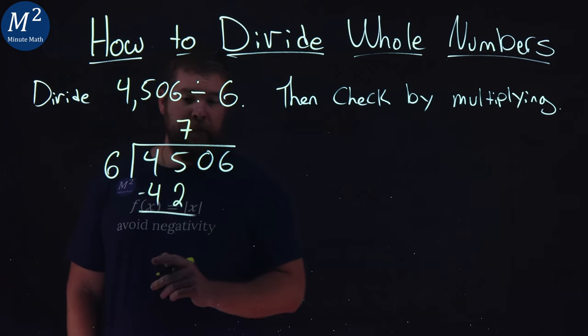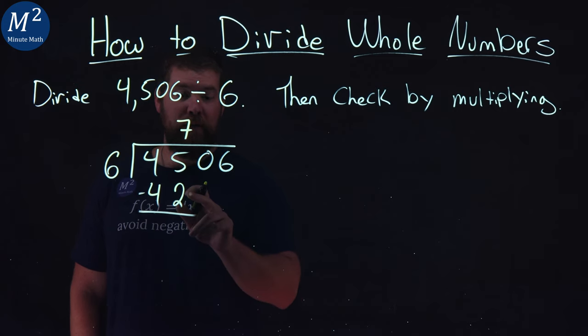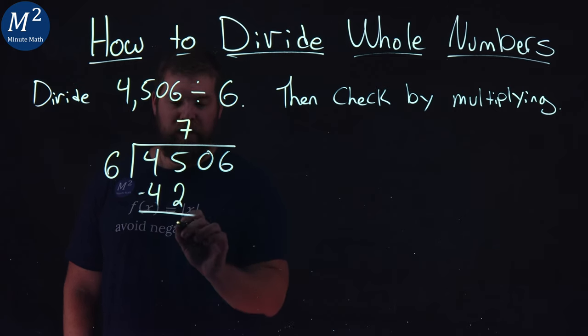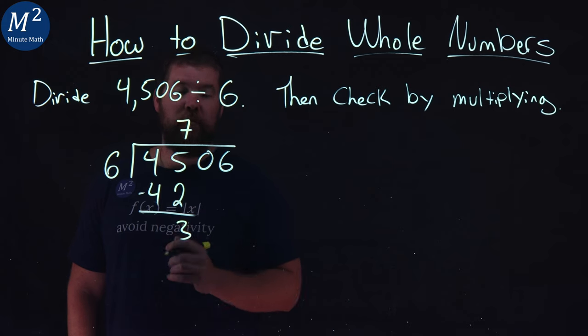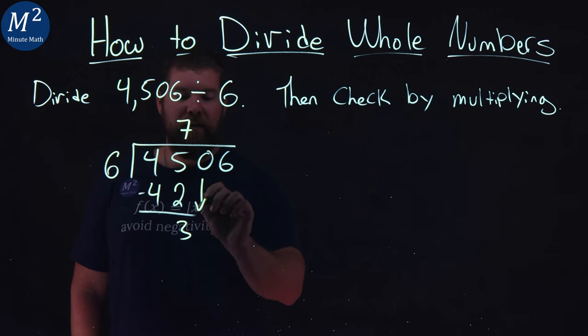Subtract the two right now. 5 minus 2 gives me 3. And the 4 is canceled, so we just have 3 left over. Bring down the 0.